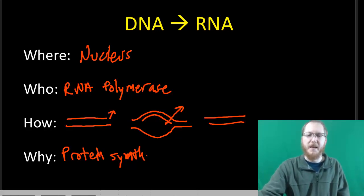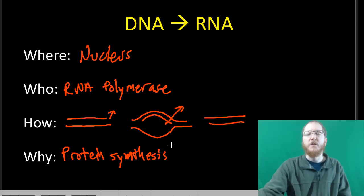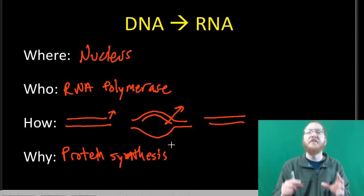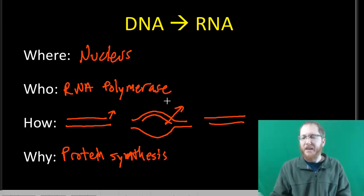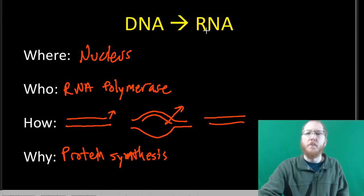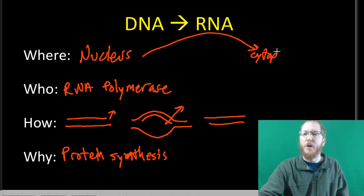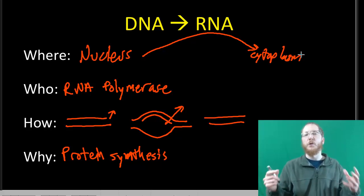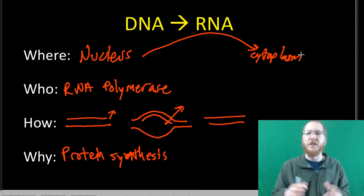To do protein synthesis, we have to get the code on how to make that protein from the nucleus to the cytoplasm. That's what we need this RNA for, because the RNA is going to go from the nucleus to the cytoplasm. That's where the rest of the central dogma is going to occur, in the cytoplasm of the cell.